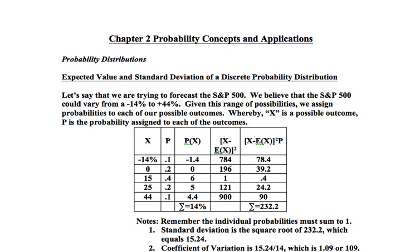In this video I want to look at an application of utilizing a discrete probability distribution. From the following table, what we want to do is forecast where the S&P will be 12 months from today, and in doing that we need to come up with an expected value and standard deviation.